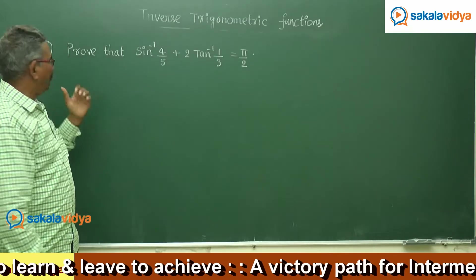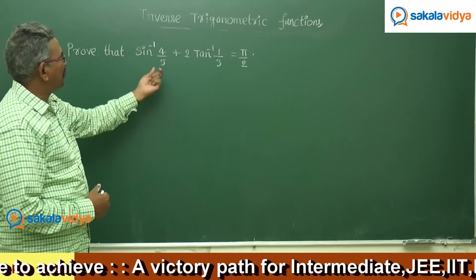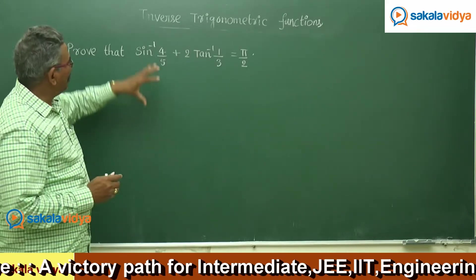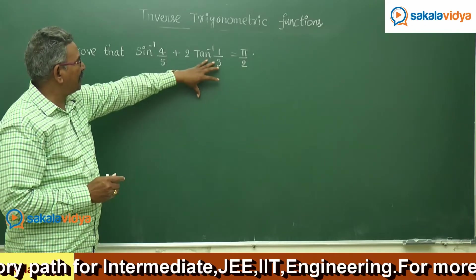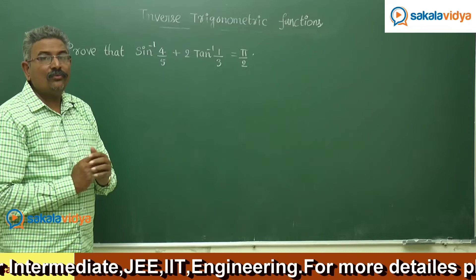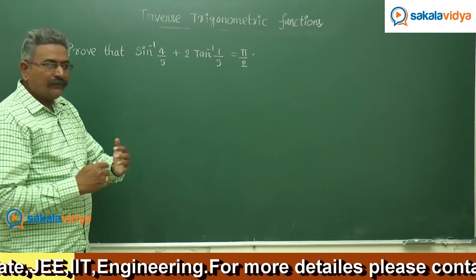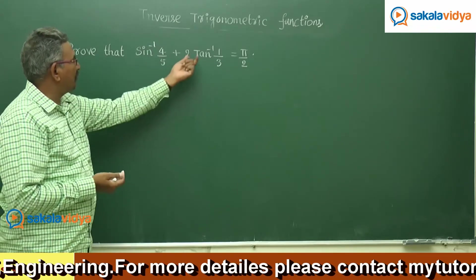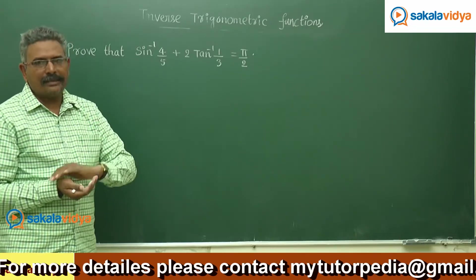Let us move to the next problem. Prove that sin inverse 4/5 plus 2 tan inverse 1/3 equals π/2. That means if sin inverse 4/5 plus cos inverse 4/5 were present, we get π/2. So our plan is to convert 2 tan inverse 1/3 in terms of cos inverse 4/5, then directly we can write π/2.